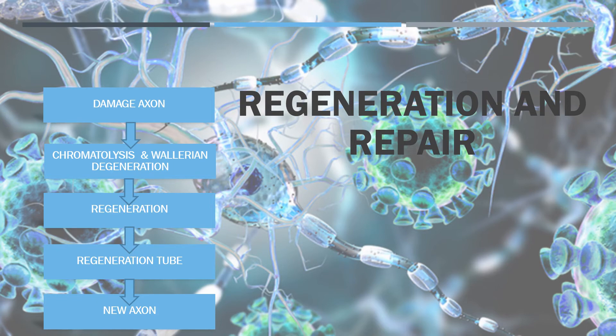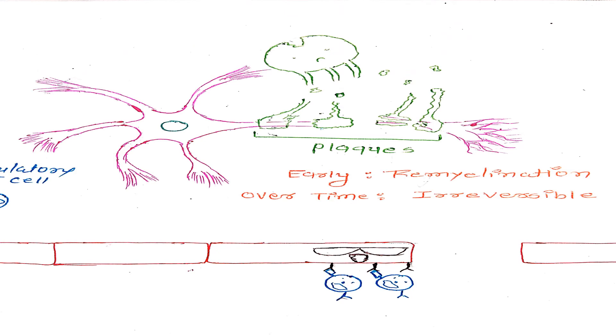So remyelination occurs early on in multiple sclerosis. Unfortunately, over a period of time, these oligodendrocytes die off, so remyelination will stop and damage becomes irreversible with loss of axons. So this is all about the pathophysiology of multiple sclerosis.